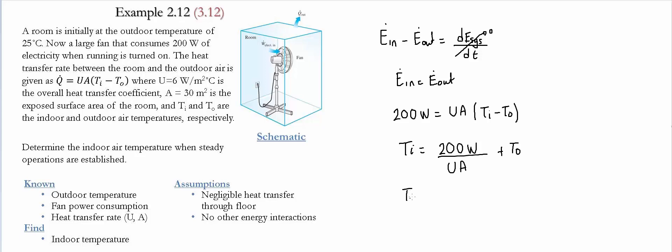We substitute the values: Ti equals 200 watts. The value of U is given to be 6 watts per meter squared celsius. And the value of A is equal to 30 meters squared. And the value of the outside temperature is equal to 25 celsius.